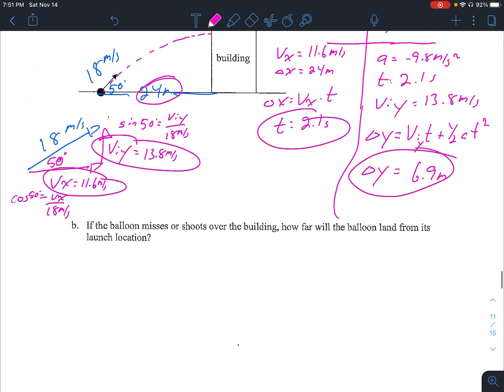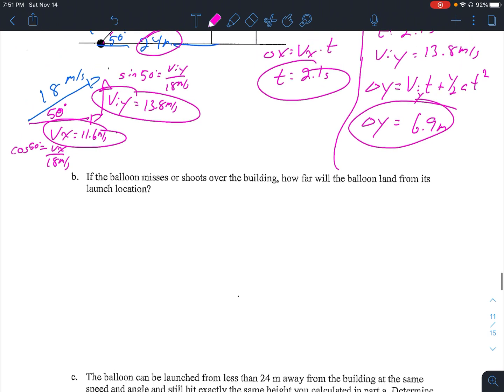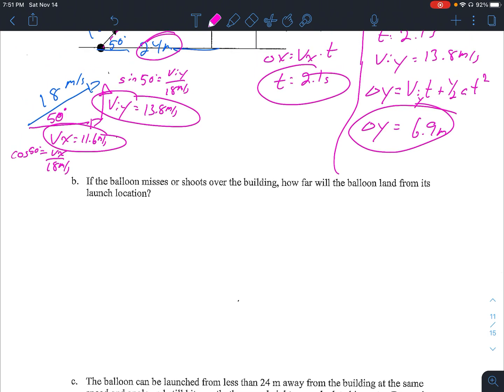Now the real question becomes, if the balloon misses or shoots over the building, how far will the balloon land from its launch location? So this is assuming that the building isn't there, and the ball is going to go up and then come back down. So when the ball goes up and comes back down, what is its overall change in position? So if it's going to start here and comes back down, its delta Y is zero. So this is the first time we've seen something like this.